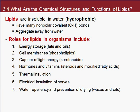We have energy storage in fats and oils, but also our cell membranes are made out of lipids called phospholipids. There are pigments that capture light called carotenoids. Also hormones and vitamins, including steroids, are lipids. They provide thermal insulation and protection, maintaining body temperature. They also insulate nerves, kind of like wires have coatings around them to prevent shorting out. And they also provide water repellency in the form of waxes and oils.